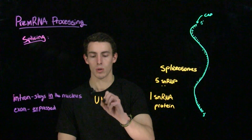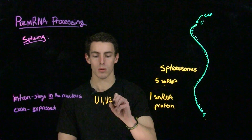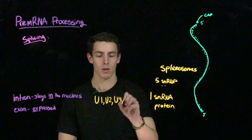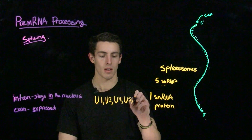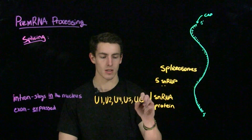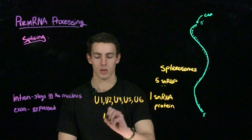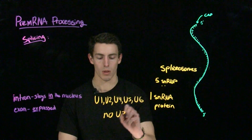For this class, there are five different SNRNPs that you have to know, and these five SNRNPs make up the spliceosome. These are U1, U2, U4, U5, and U6. Please note that there is no U3.